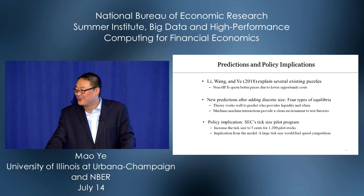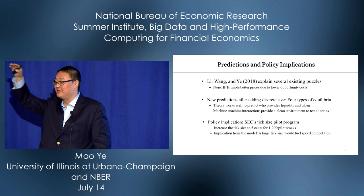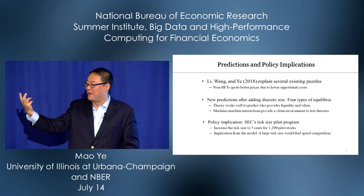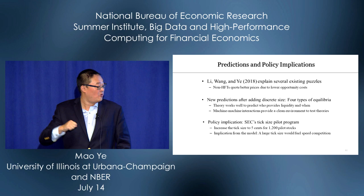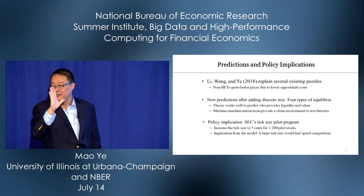If you find the economic mechanism of their behavior, you will make great predictions. Machines are less subject to sentiments and unknown variables not in the code. It also has policy implications: the SEC recently ran a tick size pilot program, randomly picking 1,200 stocks and increasing tick size from $0.01 to $0.05. Our model's implication is that this policy can potentially increase the number of IPOs.